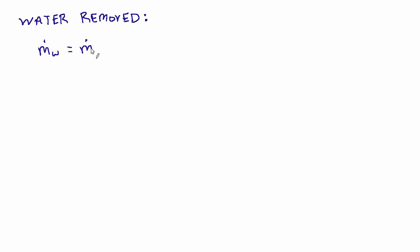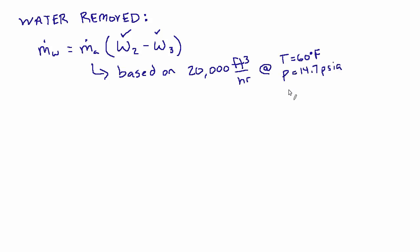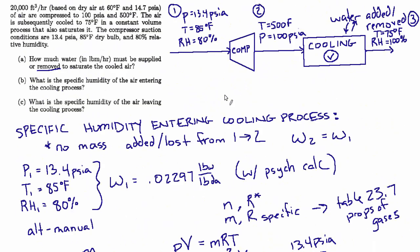It equals the mass flow rate of air times the difference in the humidity ratio, so humidity ratio at 2 minus humidity ratio at 3. And we know both of those values. But now the mass flow rate of air is actually a bit interesting. It says it has to be based on 20,000 cubic feet per hour at a temperature of 60 degrees Fahrenheit and a pressure of 14.7, and we also know that it's assumed to be dry air, so we can say a relative humidity of 0%.